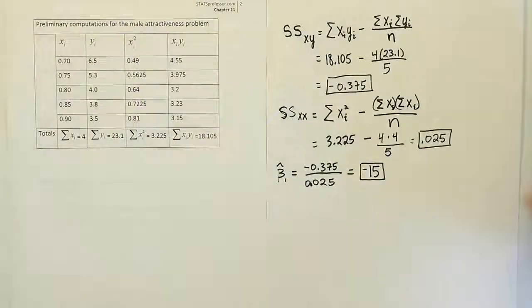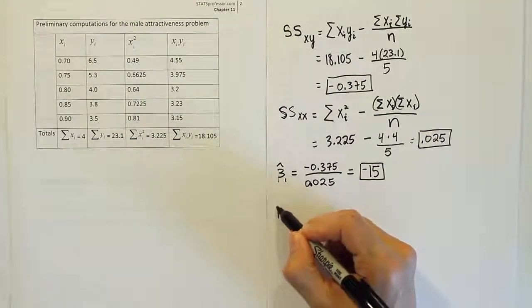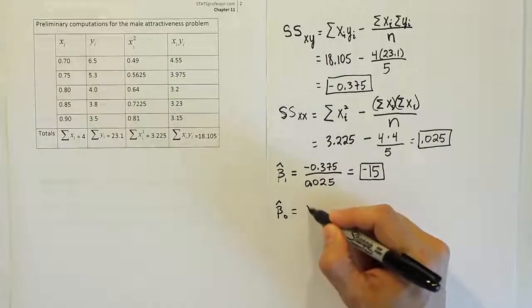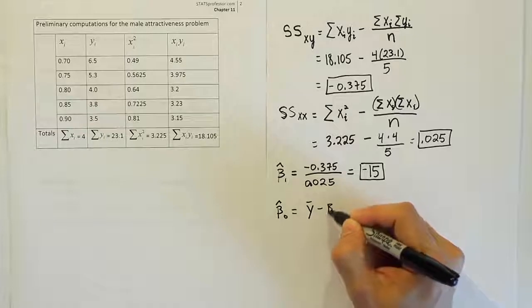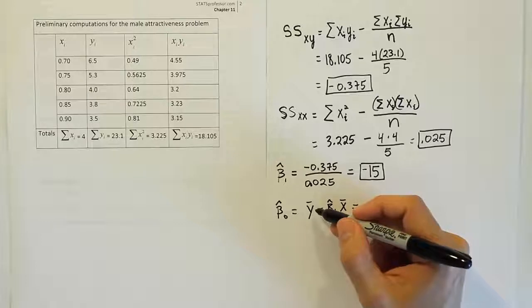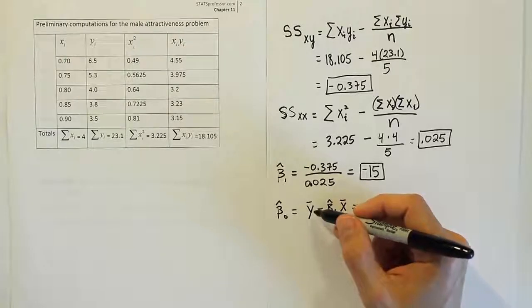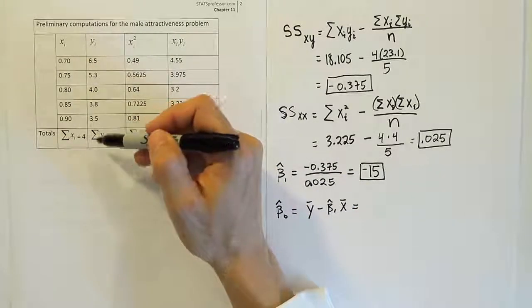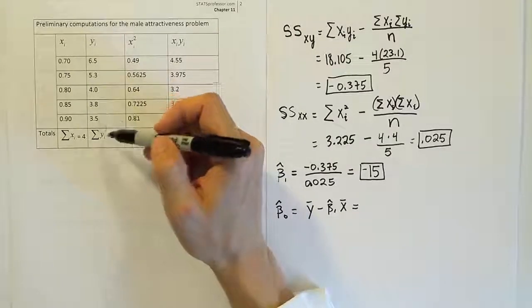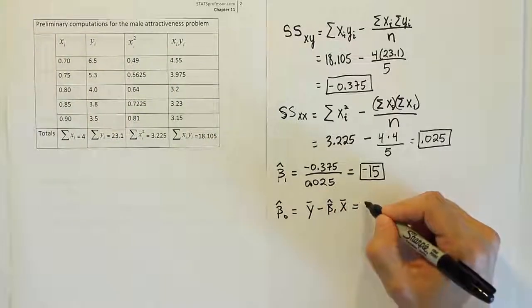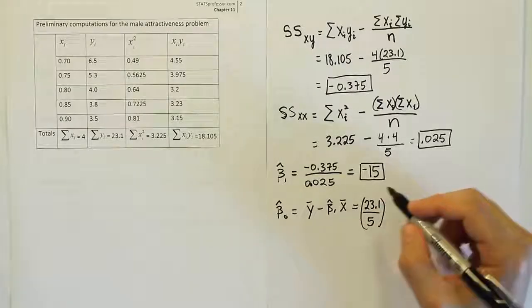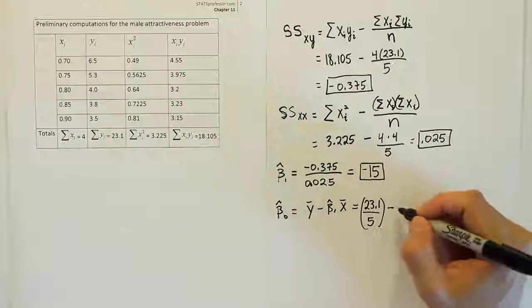We have our slope of negative 15. Our next step is to come up with the estimator of the y-intercept, beta 0 hat. That estimator is y-bar minus beta 1 hat times x-bar. y-bar is just a sample mean for y. We don't have that number, but they've already added them all up, so we just need to divide by the number of values, which is 5. So y-bar is 23.1 divided by 5. Minus the slope estimator, which was found, so minus minus 15 becomes a plus.